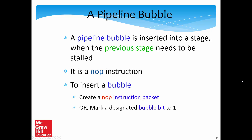A pipeline bubble is essentially a NOP instruction. To insert a bubble we create a new NOP instruction packet — as discussed in chapter 8 — that tells the pipeline stages to do nothing. We can also keep a designated bubble bit in the instruction packet set to 1, so as the packet moves across pipeline stages, the pipeline knows this is a bubble and nothing needs to be done.